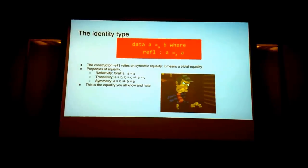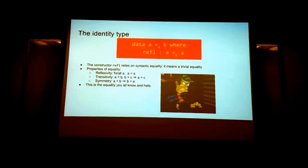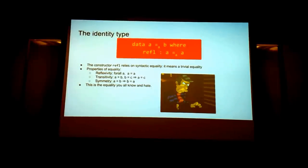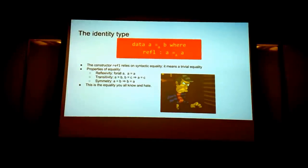Some properties of equality are reflexivity — everything is equal to itself. Transitivity — if A equals B and B equals C, then A equals C. And symmetry — if A equals B, then B equals A.